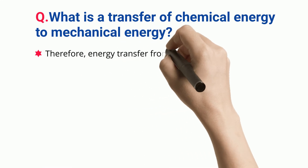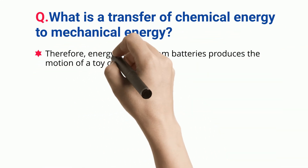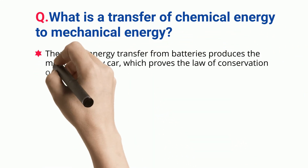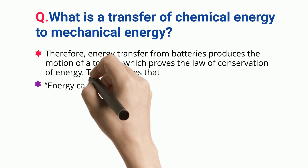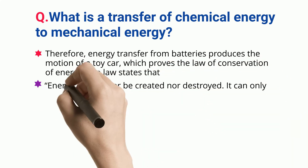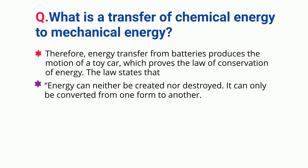Therefore, energy transfer from batteries produces the motion of a toy car, which proves the law of conservation of energy. The law states that energy can neither be created nor destroyed — it can only be converted from one form to another.